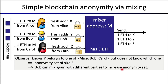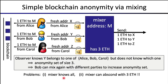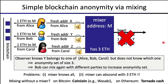That's how simple mixing works. However, there are obvious problems: the mixer knows the exact connection between output and input addresses, and the mixer could simply abscond with the funds. Can we mix without a trusted mixer? On Bitcoin, there's the CoinJoin protocol, implemented in the Wasabi wallet. On Ethereum, there's Tornado Cash, a trustless mix we'll see later in the lecture.